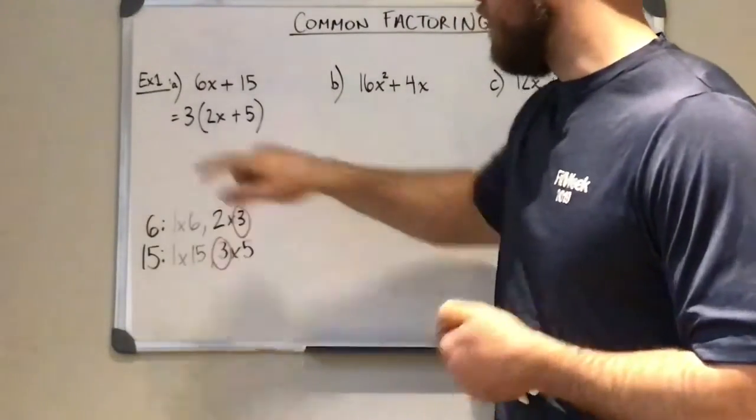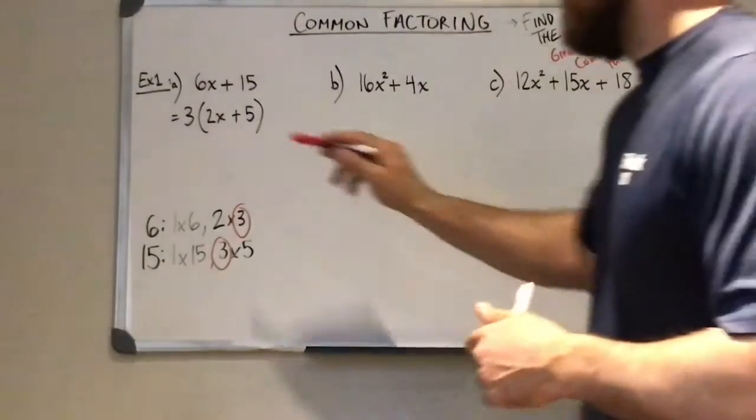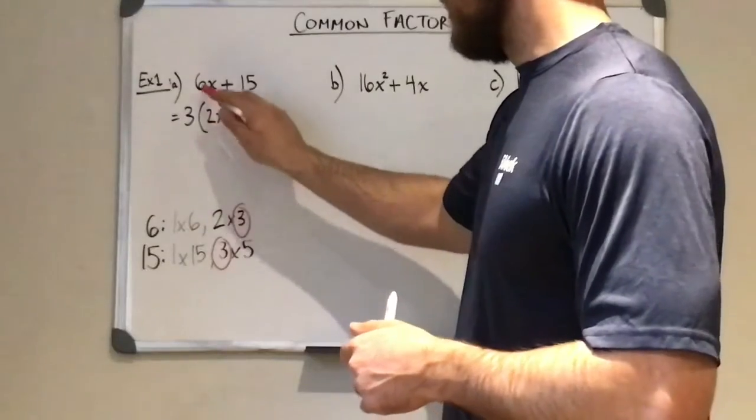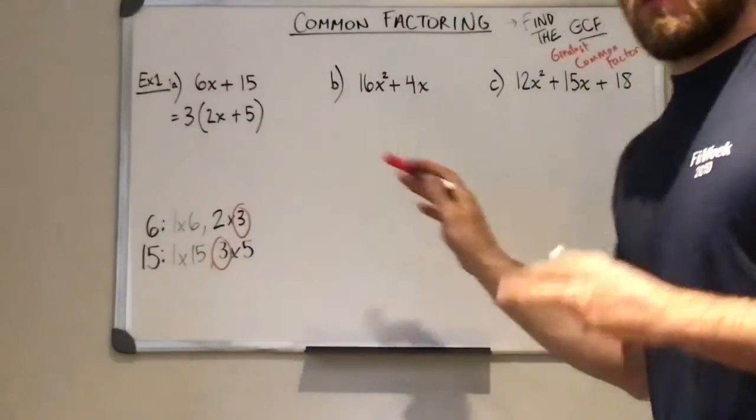Now, a quick way to check this, to see if you did it right, is multiply it back in. 3 times 2x would be 6x. 3 times 5 would be 15. So we know this one's right.